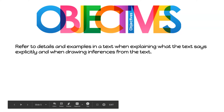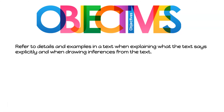First, I hope that you are able to refer to details and examples in the text when explaining what the text says explicitly and when drawing inferences from the text. Remember, when we draw inferences we use what we see in the text and the schema in the back of our brain, put it together, and come up with a piece of information that the author did not exactly tell you.